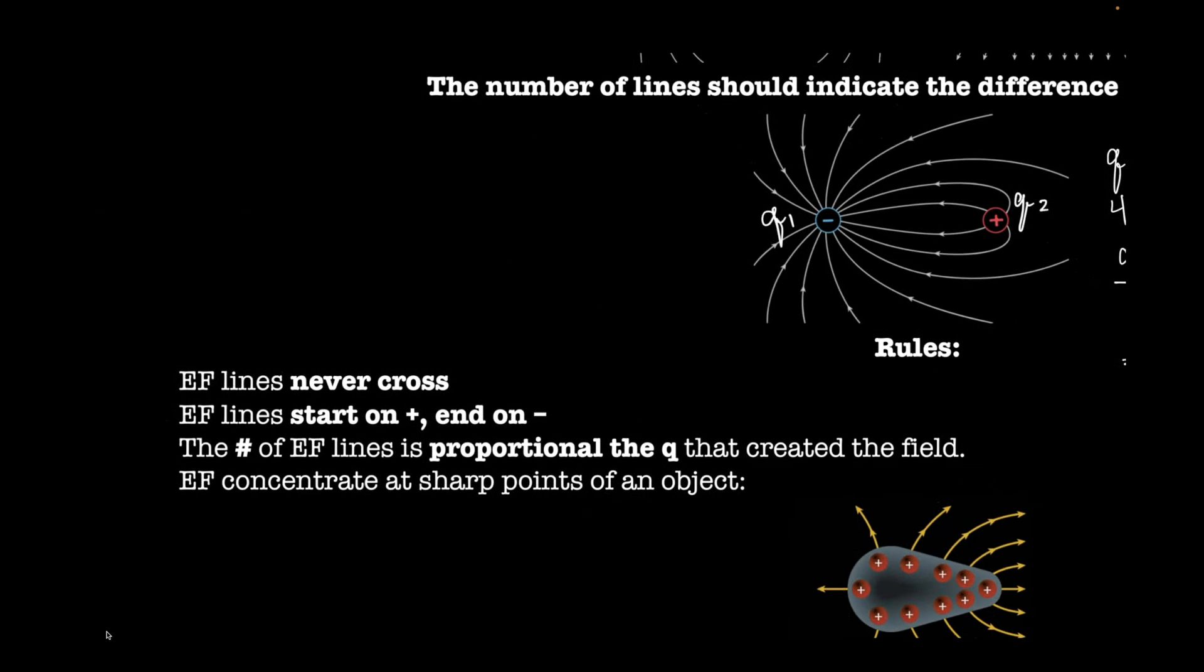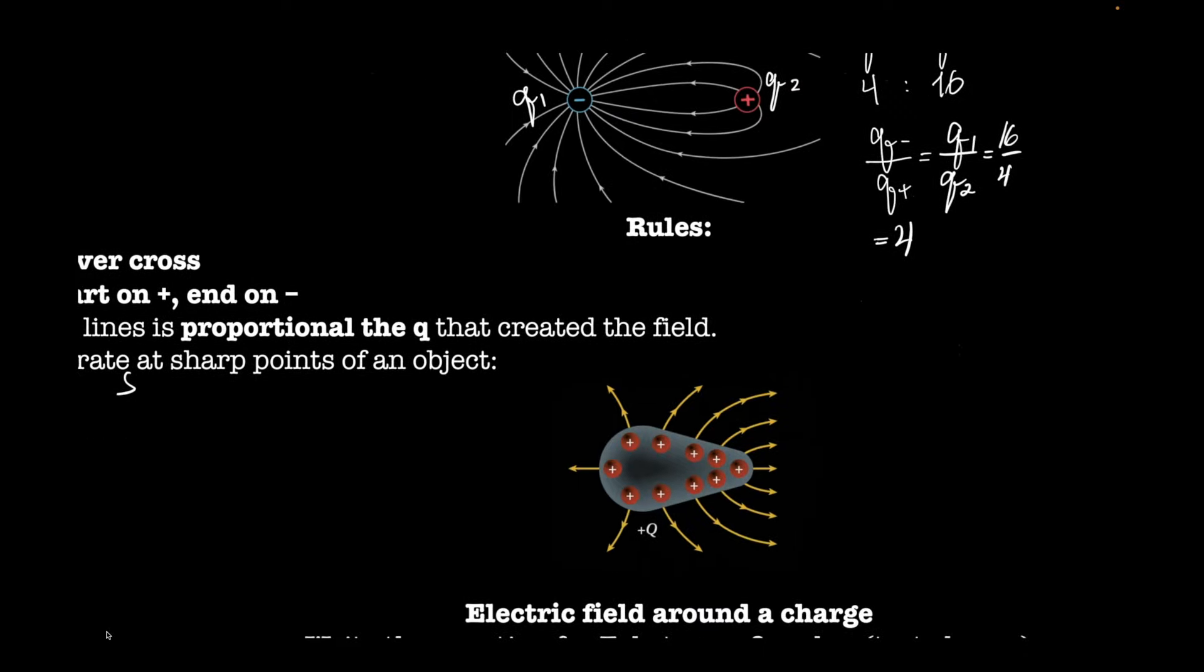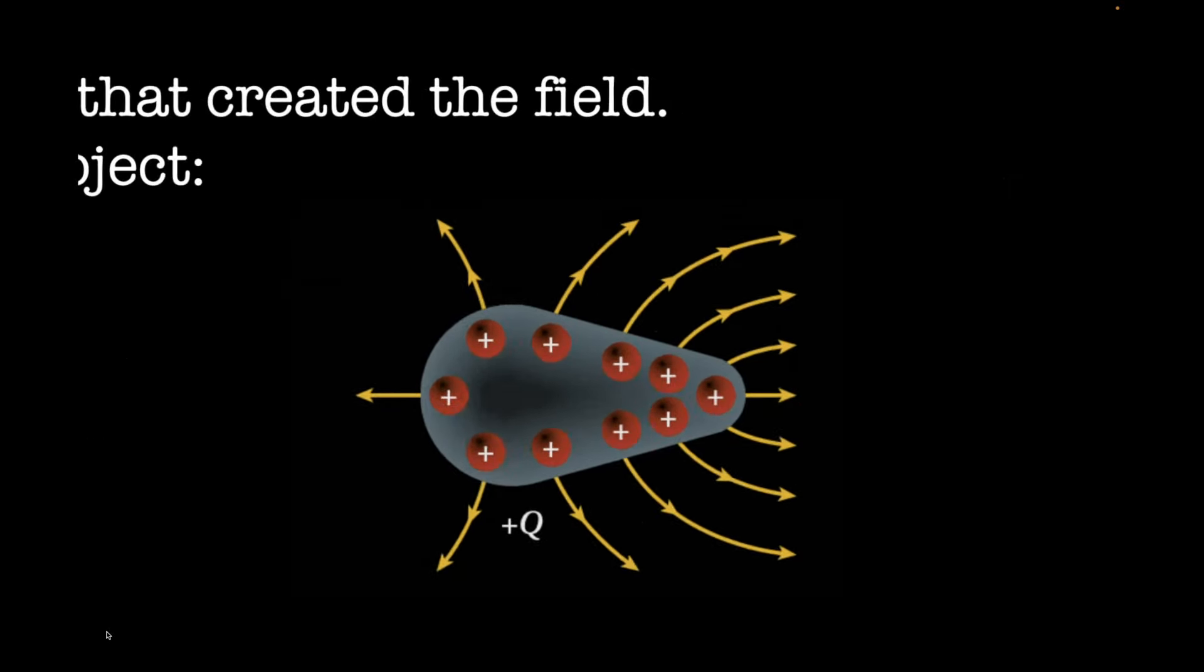Again, rules on those lines. They're never going to cross. They will start on the positive and end on the negative, and they will be, the number of them will be proportional. And also, electric field would concentrate, oh my goodness, grammar mistake, concentrates at sharp points of an object. So here's an example. You have the concentration of charges at the pinpoint of this funny shaped object. In your homework, you have a question about why are you more likely to be shocked when you touch metal with your finger versus your hand. Here's your explanation. Your hand would be a wider area, whereas your finger is a pointy area.